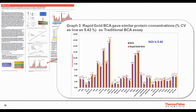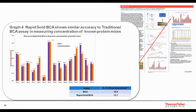The Rapid Gold BCA gives similar protein concentrations for unknown lysates as the traditional BCA. The percent CV between these two assays is 5.42, so they give very similar results. With pure proteins as well, there is agreement between the Rapid Gold BCA and the traditional BCA. We see an 18.6% CV with BCA and 13.7% CV with the Rapid Gold BCA when compared to theoretical concentrations, which were obtained by measuring absorbance at 280 nanometers.